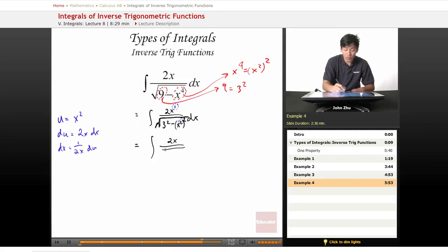So plugging this back in, 2x over root of 3 squared minus u squared times dx, which is 1 over 2x du. Aha, 2x's cancel out.